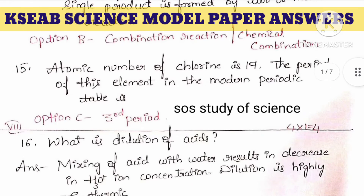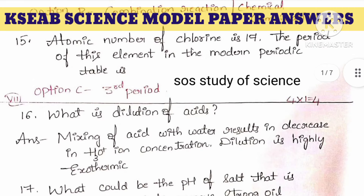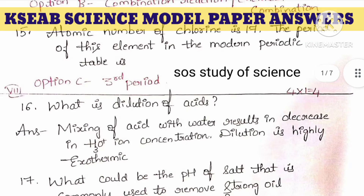15th question: the atomic number of chlorine is 17. What is the period of this element in the modern periodic table? The right answer is option C. The 17th element, chlorine, belongs to the third period.